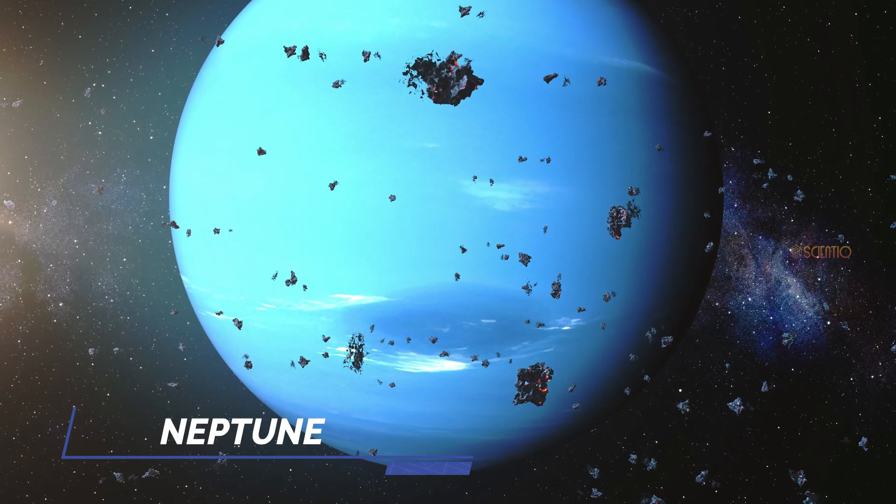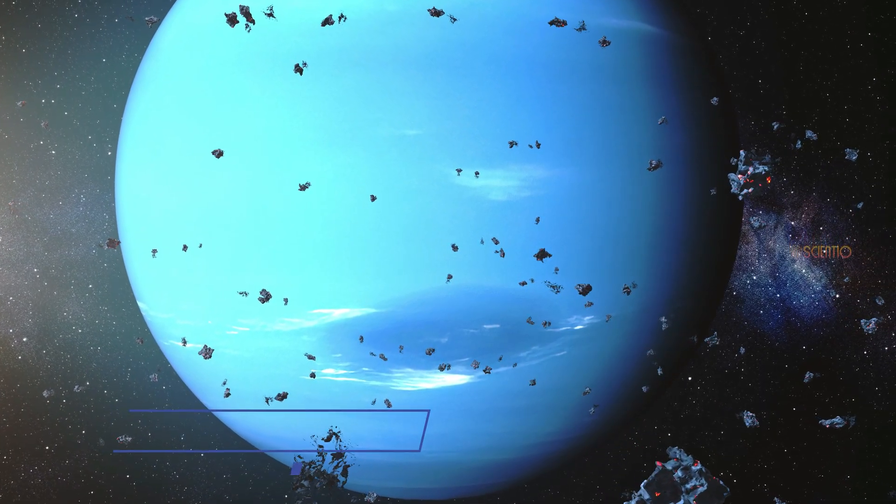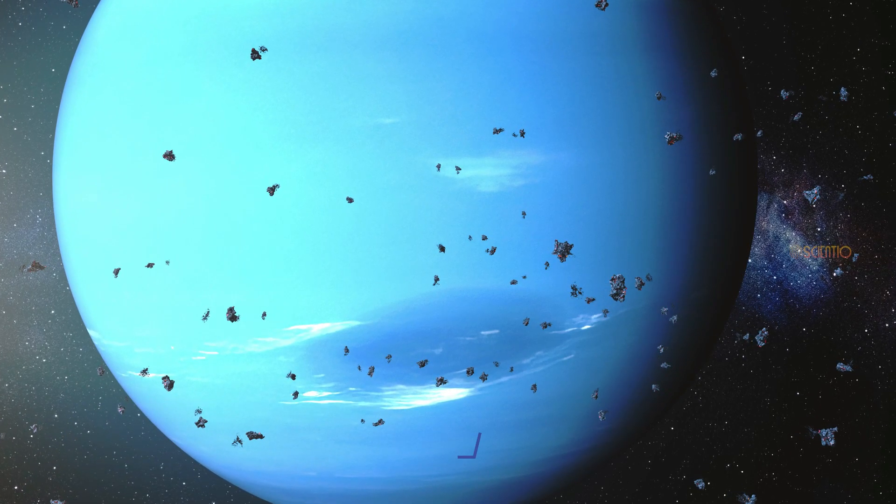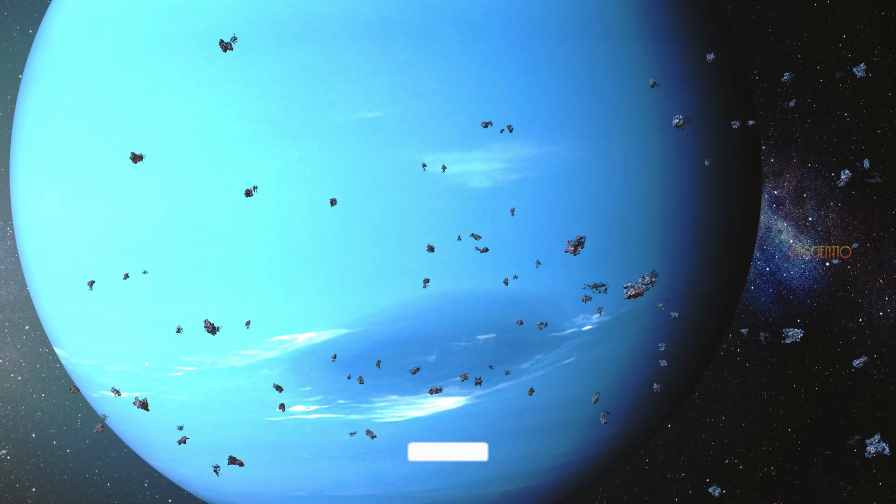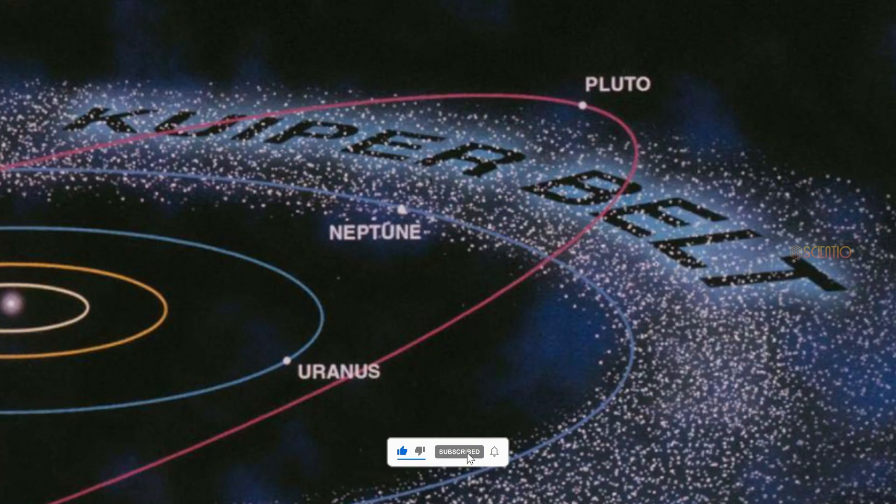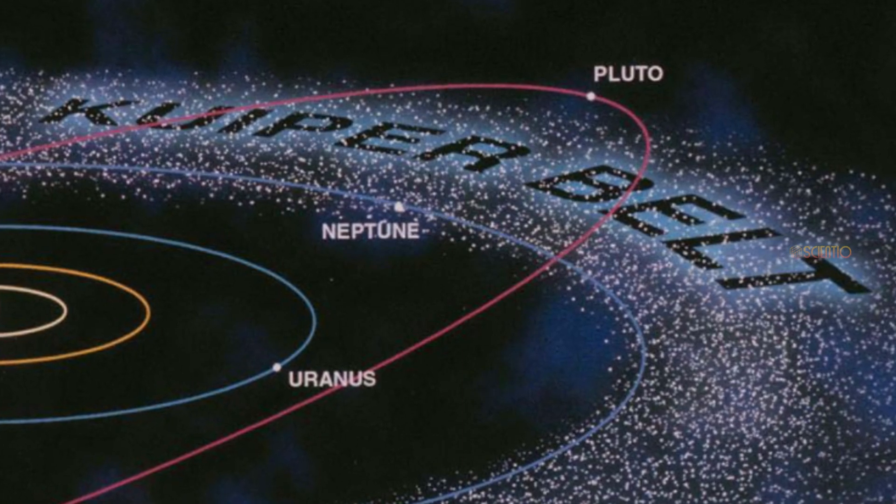Neptune. Our journey finally takes us to Neptune, which is located approximately 4 hours and 24 minutes away from the sun. We'll witness its deep blue color and the great storms that rage on its surface. Once we've explored Neptune, we've reached the final planet in our solar system.